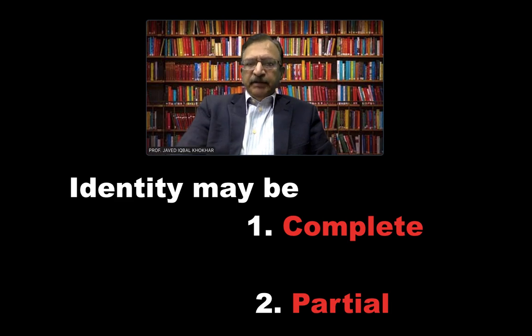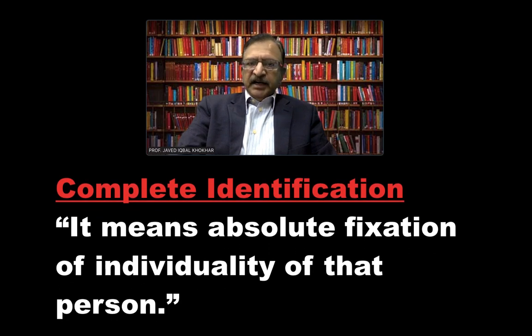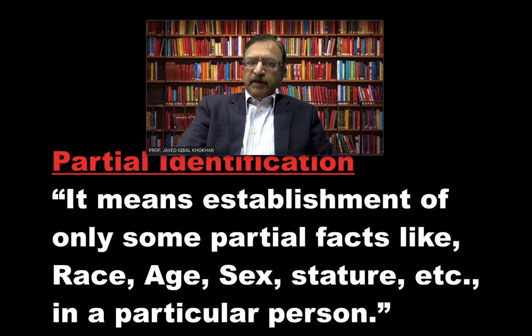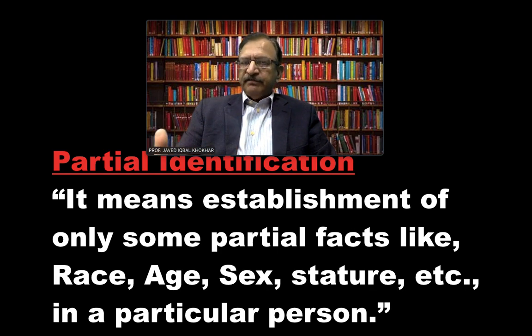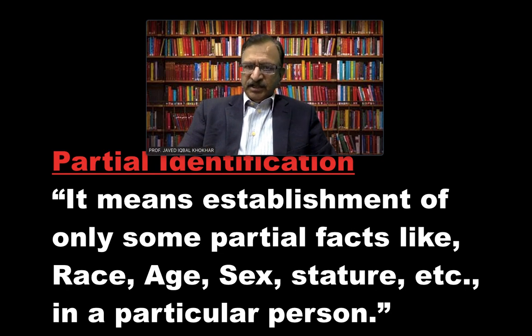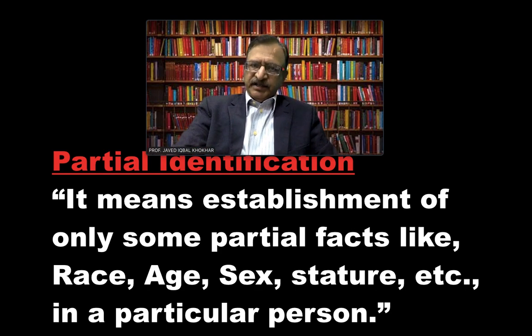Identity may be either complete or partial. Complete identification means absolute fixation of the individuality of a person. Partial identification means the establishment of only some partial facts like race, age, sex, stature, or any other parameter which helps in partial identification.